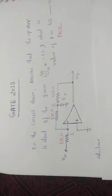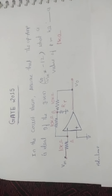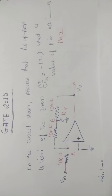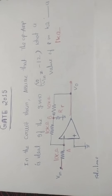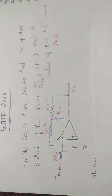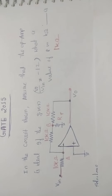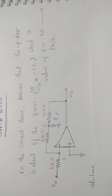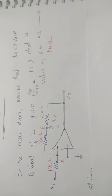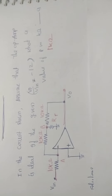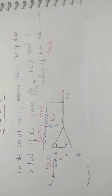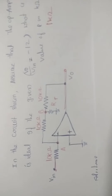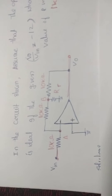Hi friends, this is the GATE 2015 question related to Electronics. The topic is operational amplifiers. In the circuit shown, assume that the op-amp is ideal. If the given V0 by Vn is equal to minus 12, what is the value of R from this circuit?